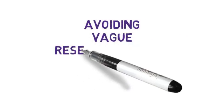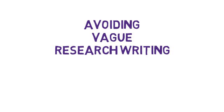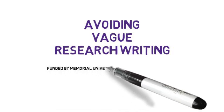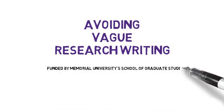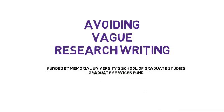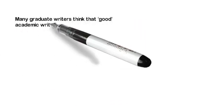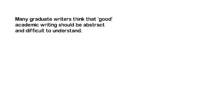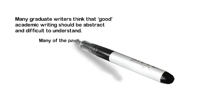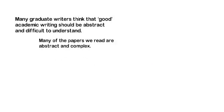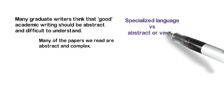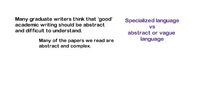Welcome to this video on avoiding vague research writing. Many graduate writers think that good academic writing should be abstract and difficult to understand, and it's not surprising because many of the papers we read are abstract and complex. But there's a big difference between specialised language versus abstract or vague language.